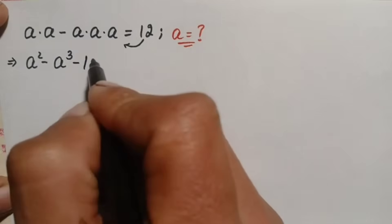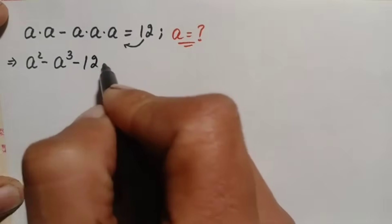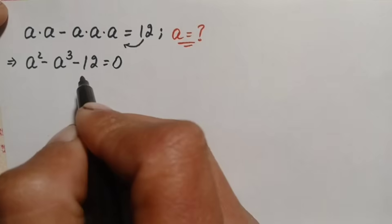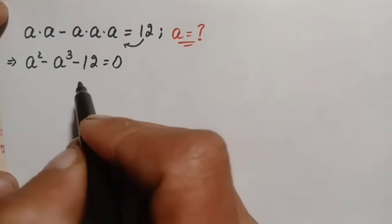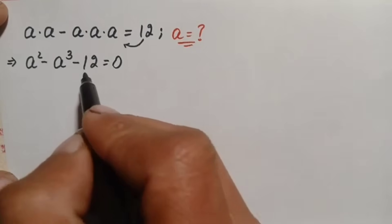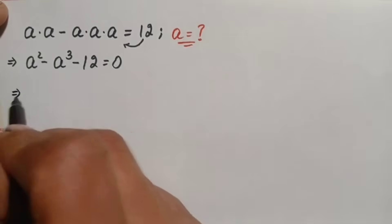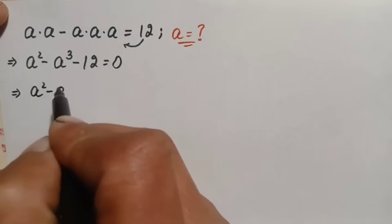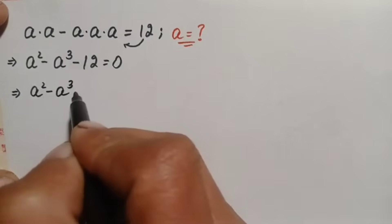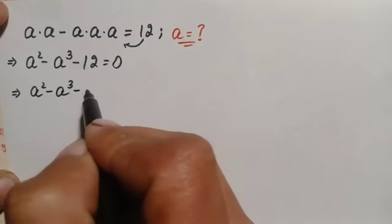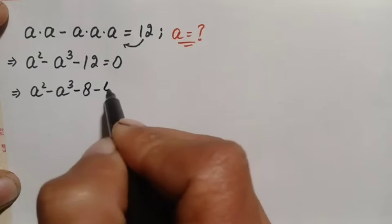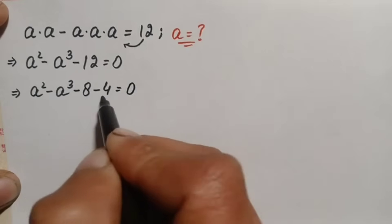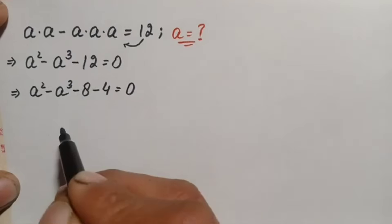Moving 12 to the left hand side gives us a squared minus a cubed minus 12 equals zero. We will split negative 12 into the sum of negative 8 and negative 4, giving a squared minus a cubed minus 8 minus 4 equals zero. The sum of these two numbers gives negative 12.